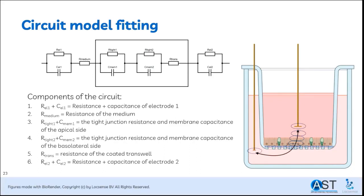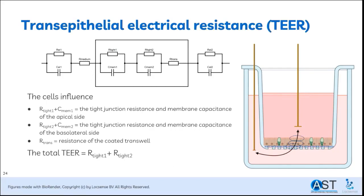Now we have the whole circuit with all its components. Zooming in on the impedance caused by the cells, we see two RC circuits and a cell-transwell interface. The choice for each RC circuit is to either go through the cell membrane (the capacitors) or the tight junctions (the resistors). The total TEER is the sum of the apical tight junction resistance and the basolateral tight junction resistance. With circuit model fitting and full-spectrum impedance results, you can assign a value to each component and thereby find the TEER.